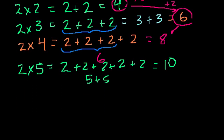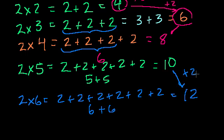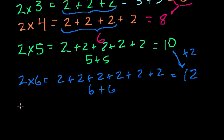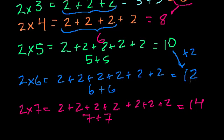I'll finish the 2 times tables. 2 times 6 is 2 plus itself 6 times, which should also equal 6 plus 6, and that's 12 — 2 more than 2 times 5. 2 times 7: that's the same as 7 plus 7, which is 14, or just 2 more than 12.